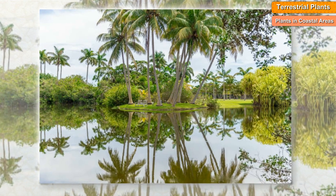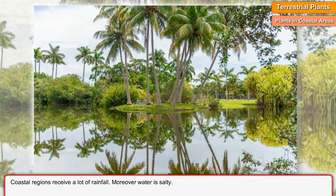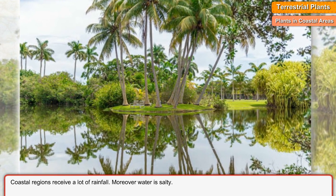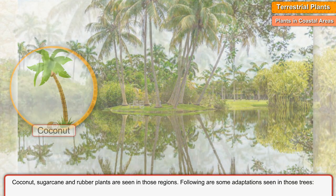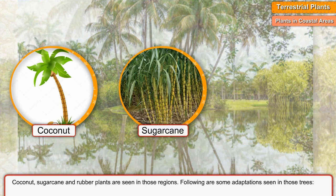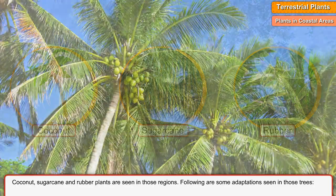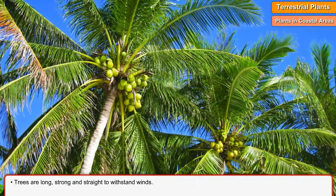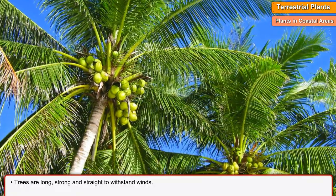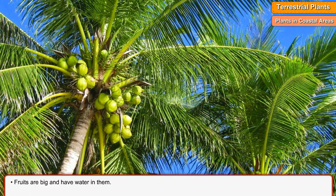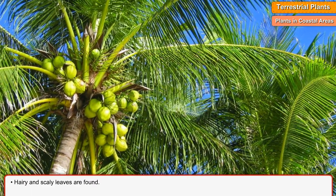Plants in Coastal Areas. Coastal regions receive a lot of rainfall. Moreover, the water is salty. Coconut, sugarcane, and rubber plants are seen in those regions. Trees are long, strong, and straight to withstand winds. Fruits are big and have water in them. Hairy and scaly leaves are found.